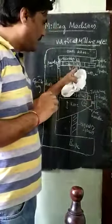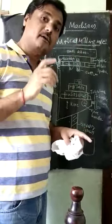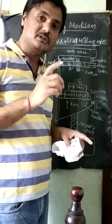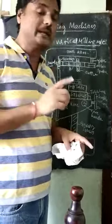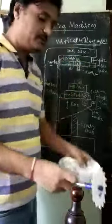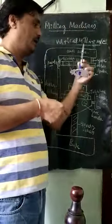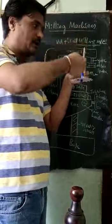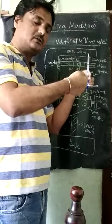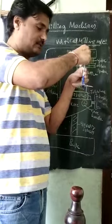In the case of the vertical milling machine, the axis of the milling cutter — about which it is rotating — is vertical, whereas here in the horizontal machine it is horizontal. So this axis will be vertical like this, and this is the vertical axis of the milling cutter about which it is rotating.